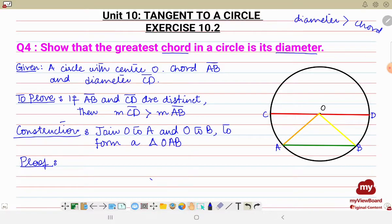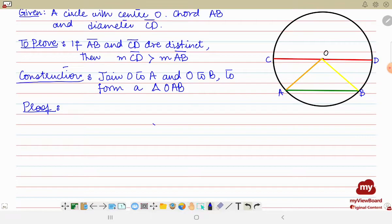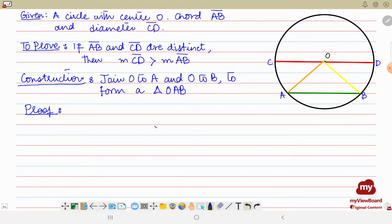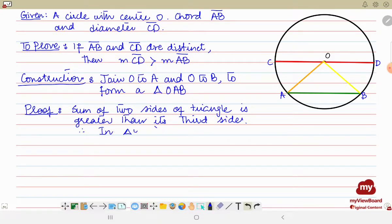What was the theorem? The theorem was that if we add two sides of a triangle, then the sum of those two sides will be greater than the third side, right? So we'll be writing down the same thing: sum of two sides of triangle is greater than its third side, right?